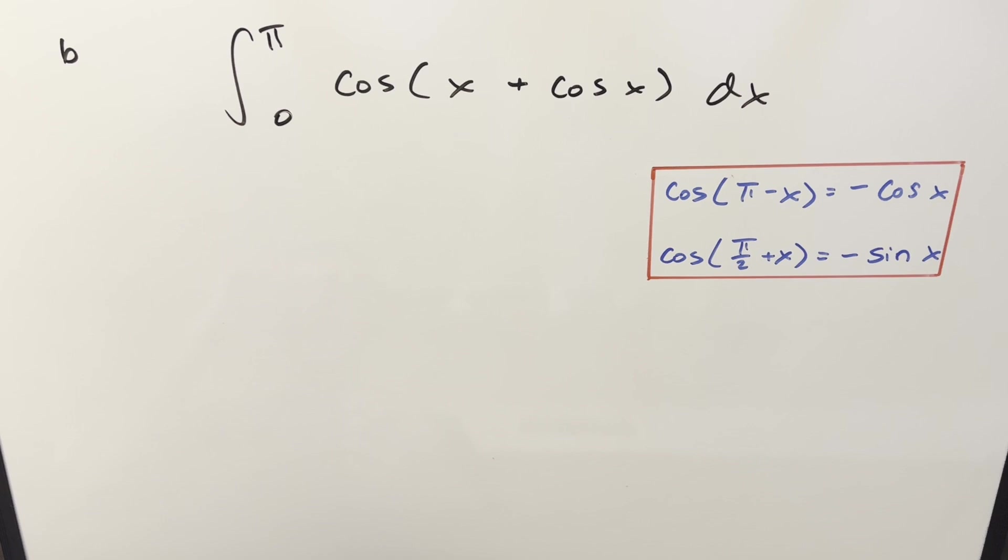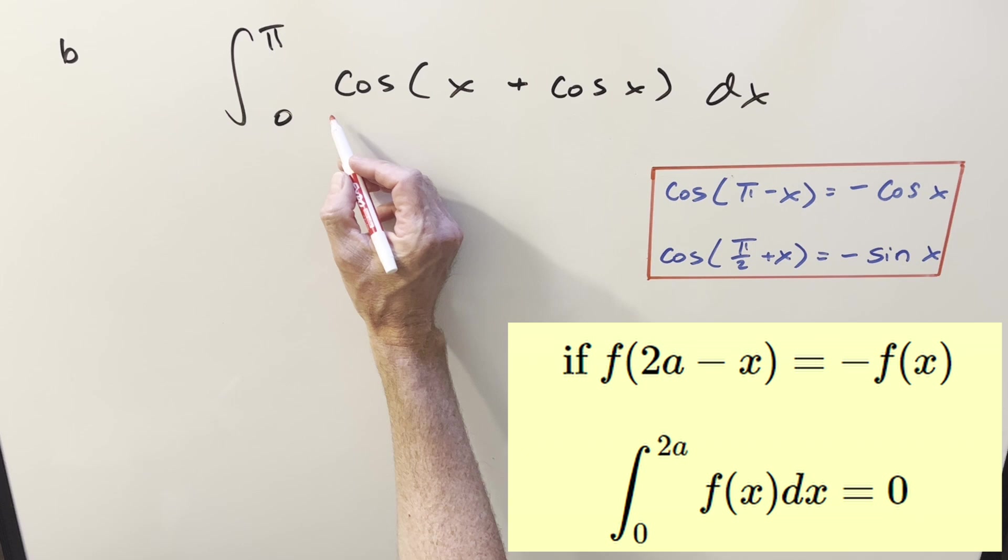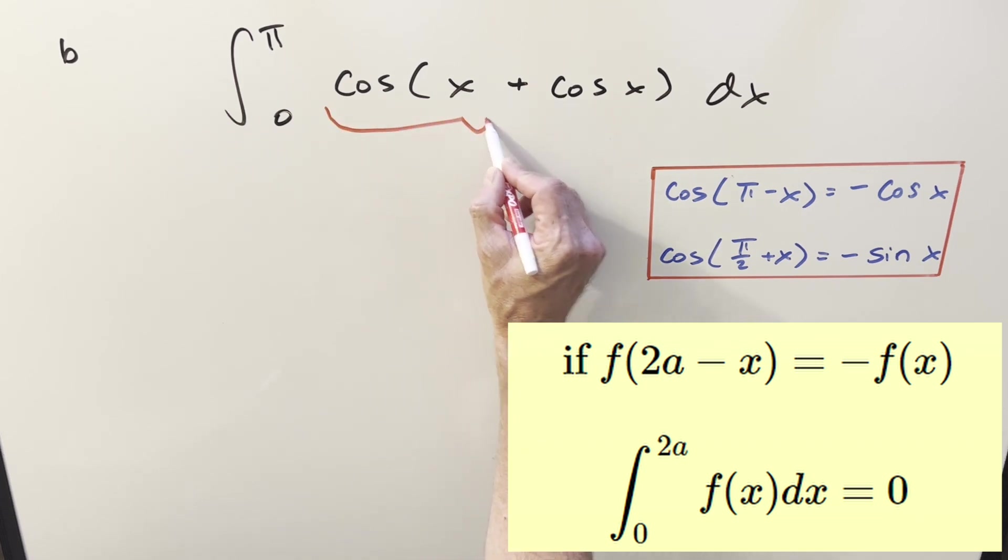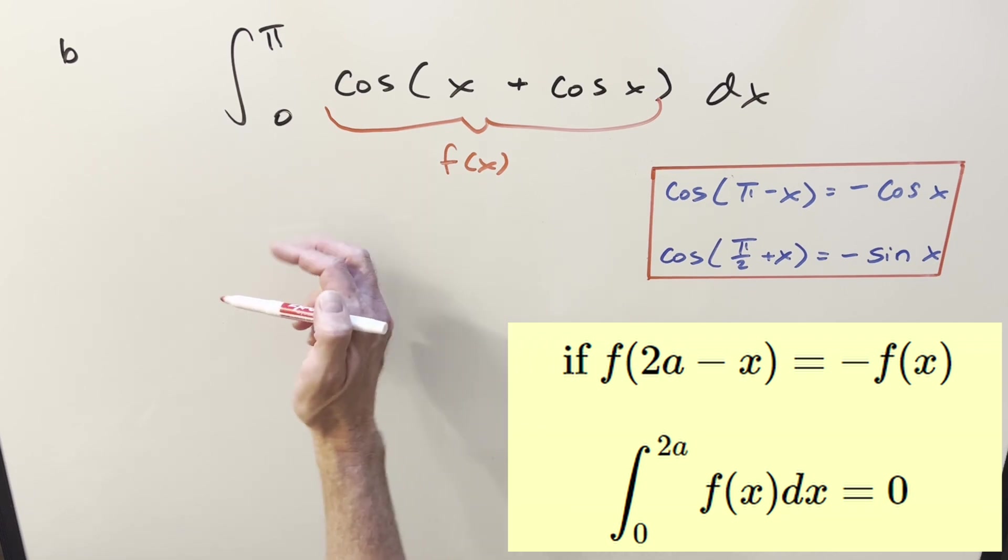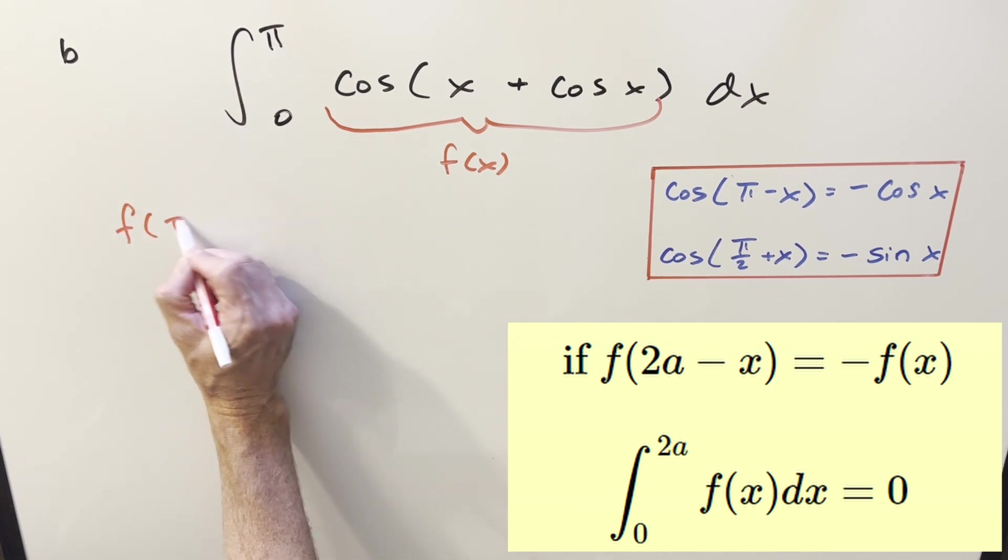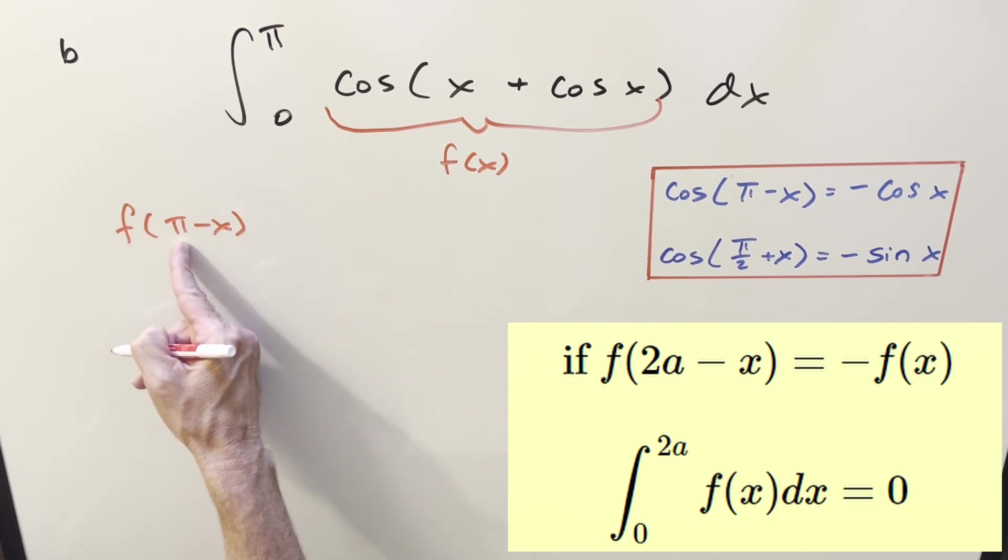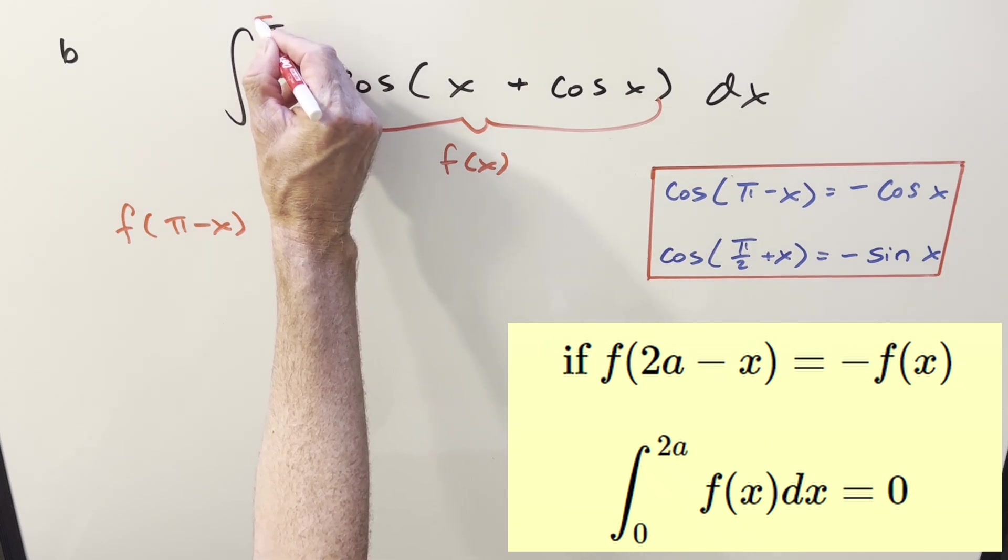I'm going to do two methods on this one. For my first method, let's try King's principle on it. What I'm going to want to do is we'll call the whole integral here our f of x value. And the check we want to do is just going to be f of π minus x. The π is just coming from the upper bound right here.